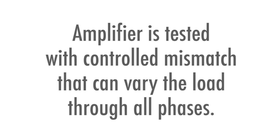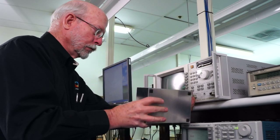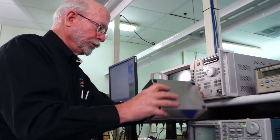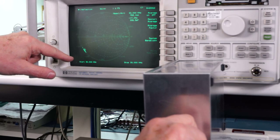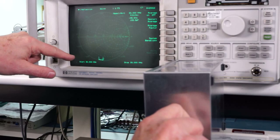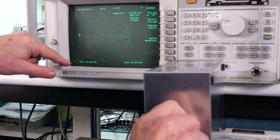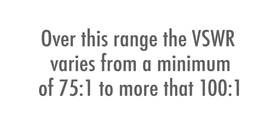Finally, we test the amplifier with a controlled mismatch that can vary the load through all phases. To show this, we first connect the tunable load to a network analyzer. Here we see that by changing the control circuit, we can vary the phase of the reflection coefficient all the way around the Smith chart. Over this range, the VSWR varies from a minimum of 75 to 1 to more than 100 to 1.